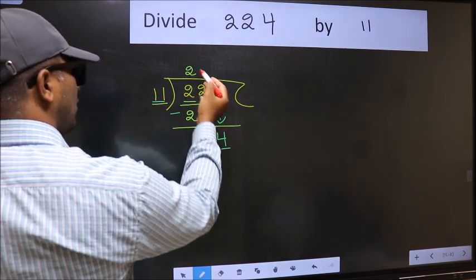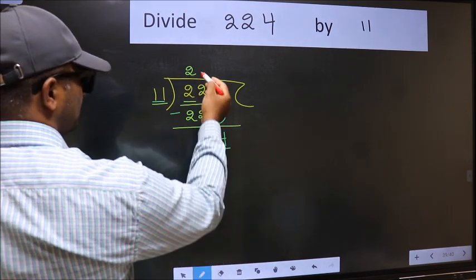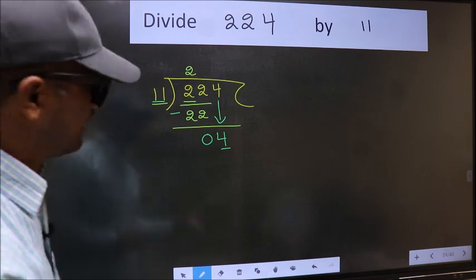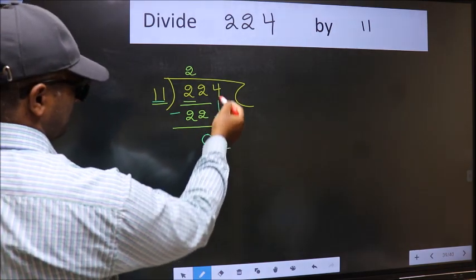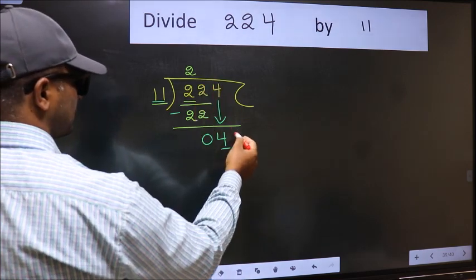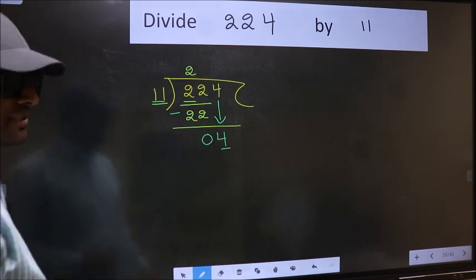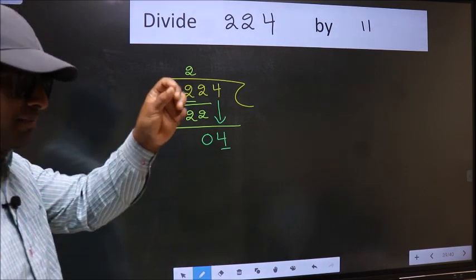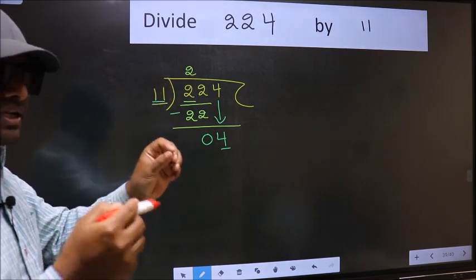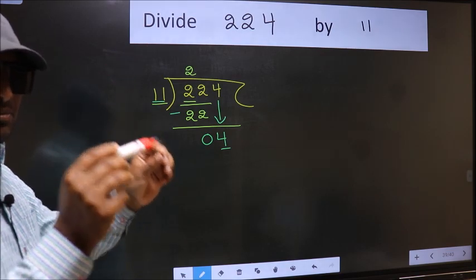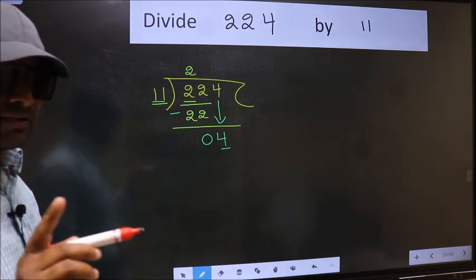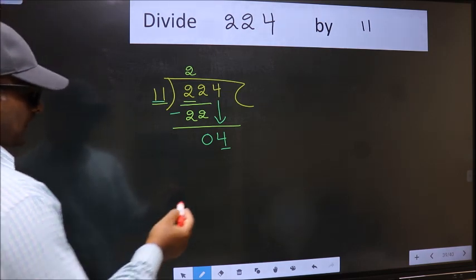...they directly put a dot and take a 0, which is wrong. Why is it wrong? Because you just brought this number down, and in that same step you want to put a dot and take a 0. Bringing the number down and also putting a dot and taking a 0 — both at the same step — you should not do.